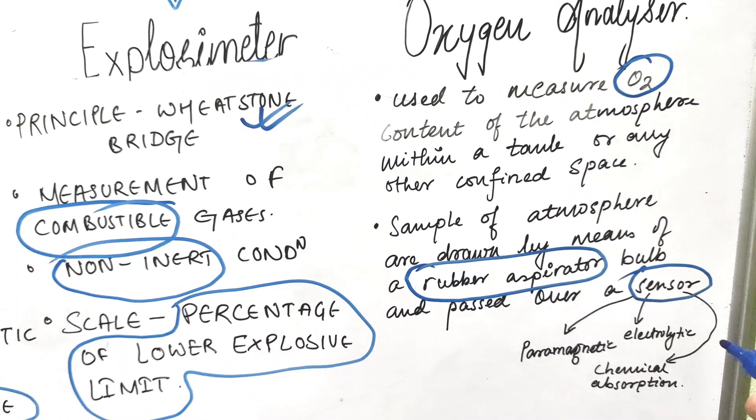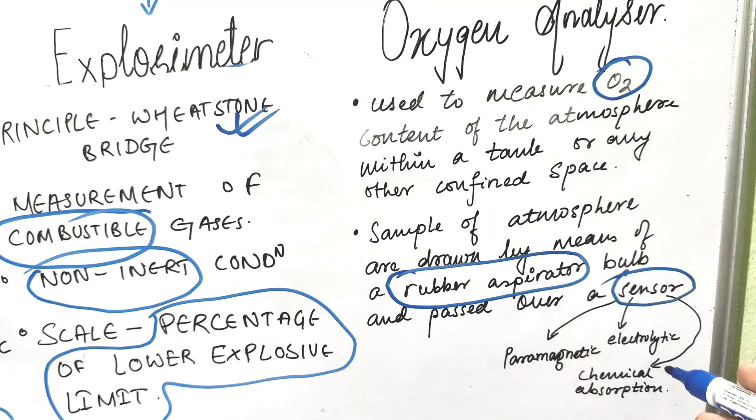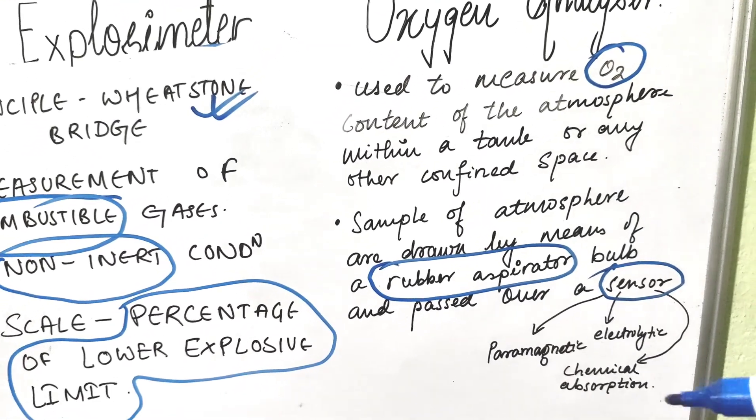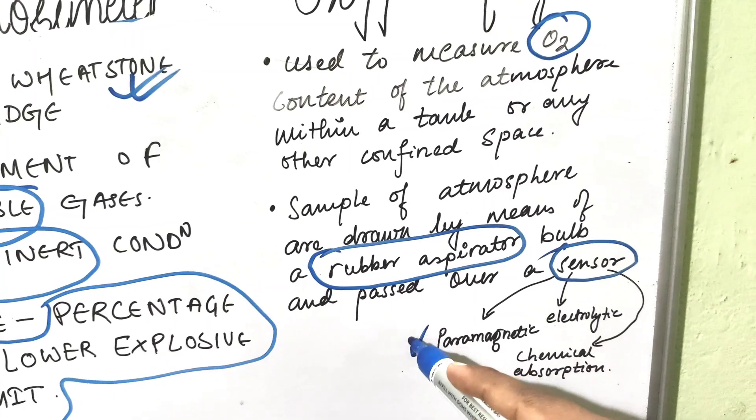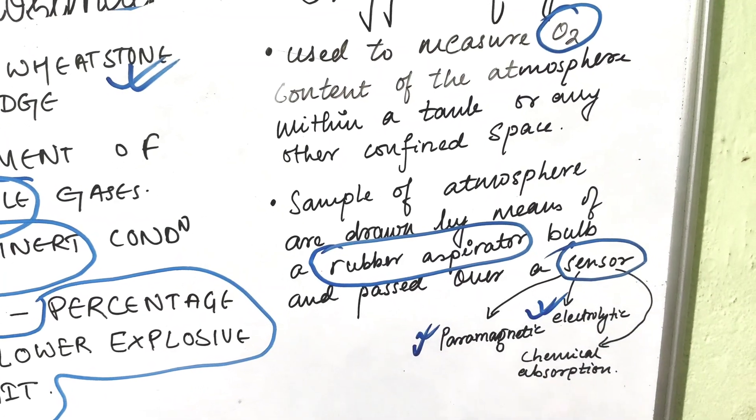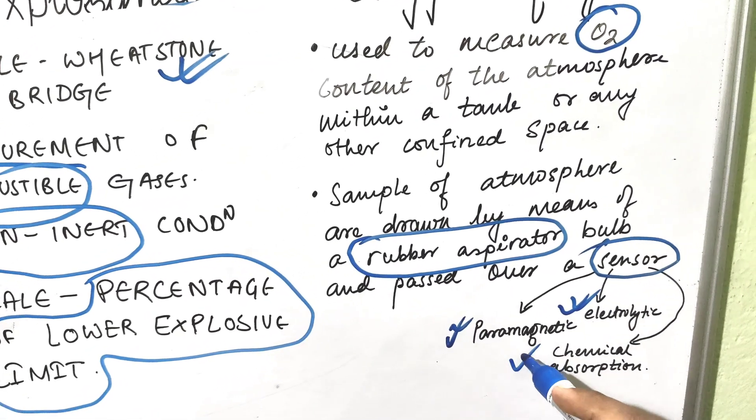There are three types of sensors used in oxygen analyzer: paramagnetic type, electrolytic type, and chemical absorption type.